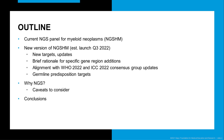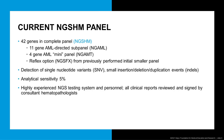I'll discuss briefly the alignment with the WHO 2022 and ICC 2022 consensus guidelines, and talk a little bit about germline predisposition targets. Then go over a couple of questions that continue to arise with next-generation sequencing testing, and then conclude. The current NGSHM panel consists of 42 genes, as well as two smaller AML-focused subpanels. The test IDs for these are NGAML and NGAMT.